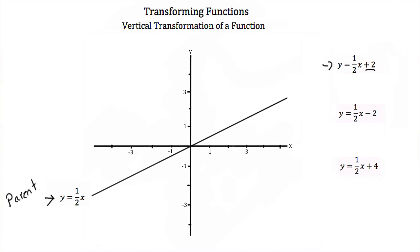Let's graph it and see what it looks like. We're going to start at our y-intercept of 2, right here. Then we're going to move up 1 and over 2 — that's our rise over run, our slope. We'll end up with a point right about there. And we'll connect the dots and end up with a line that looks like that.